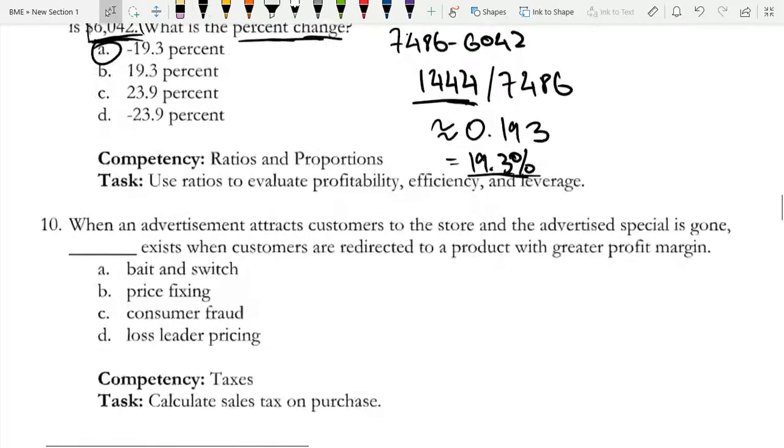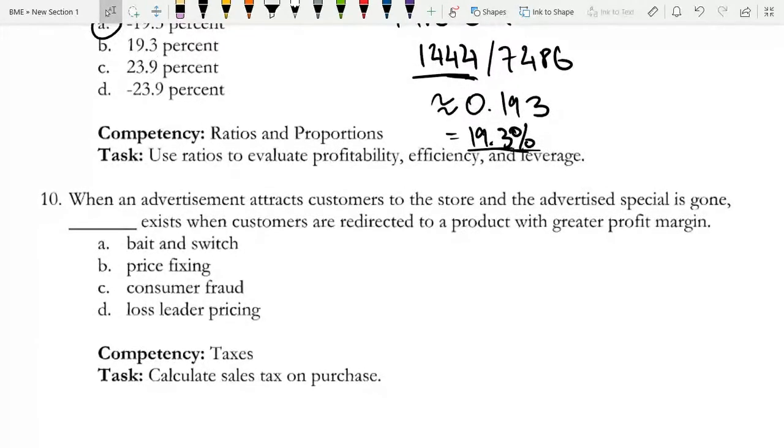Anyways, onto our last and final question. When an advertisement attracts customers to the store and the advertised special is gone, blank exists when customers are redirected to a product with a greater profit margin.